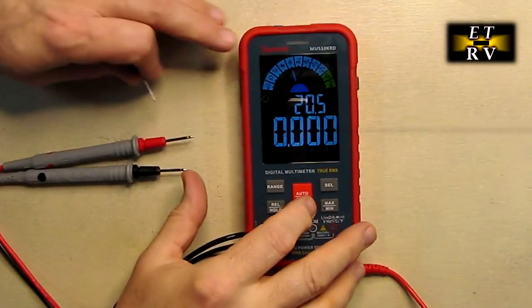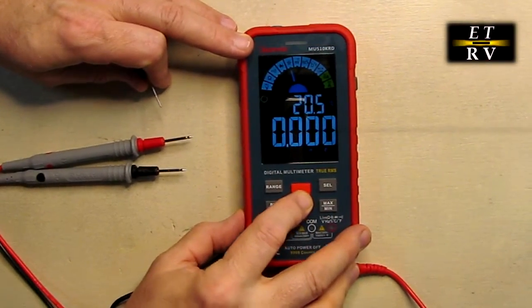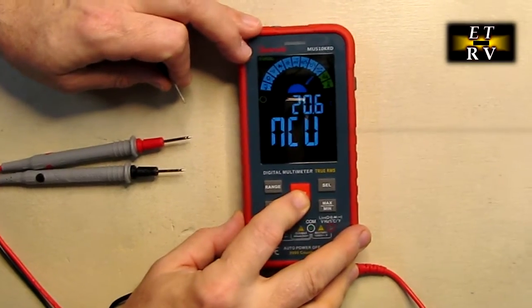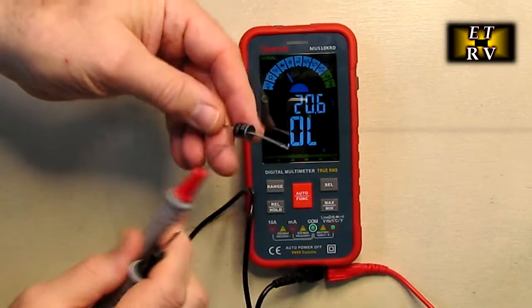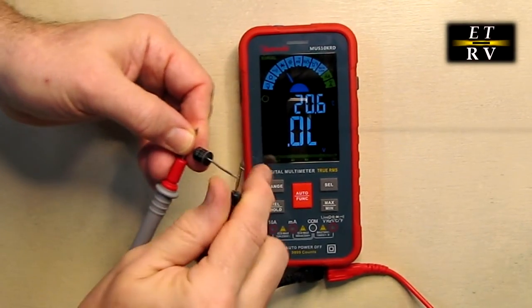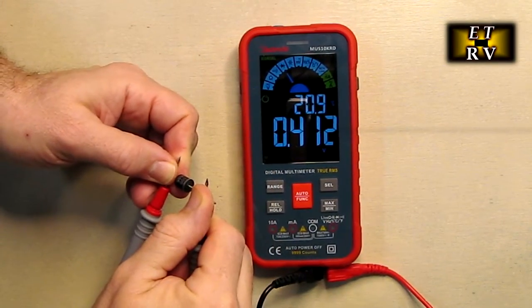Now I'm going to move the function along to the diode position. Now it's in the diode position. Here is a standard rectifier diode, and I'll put it across it like that. And look, it's telling me the forward voltage 0.413.